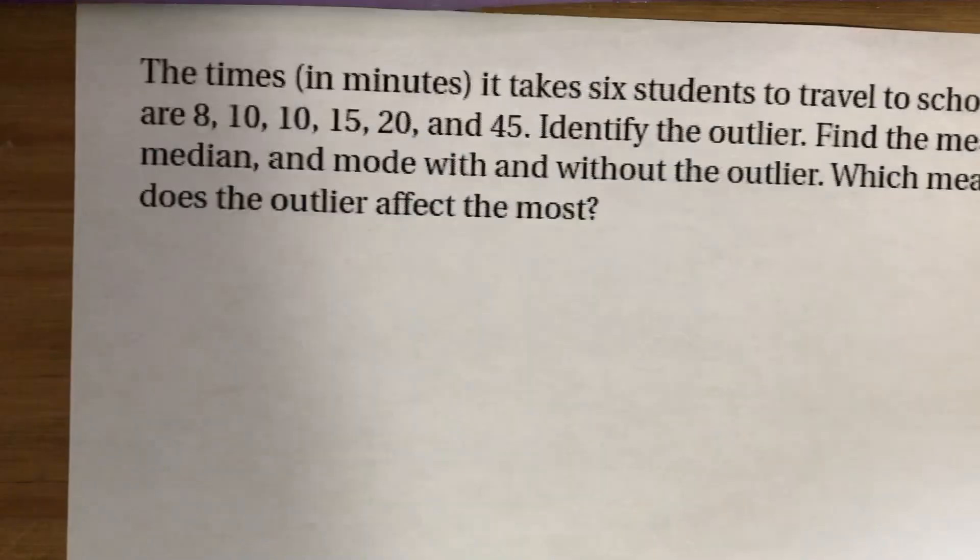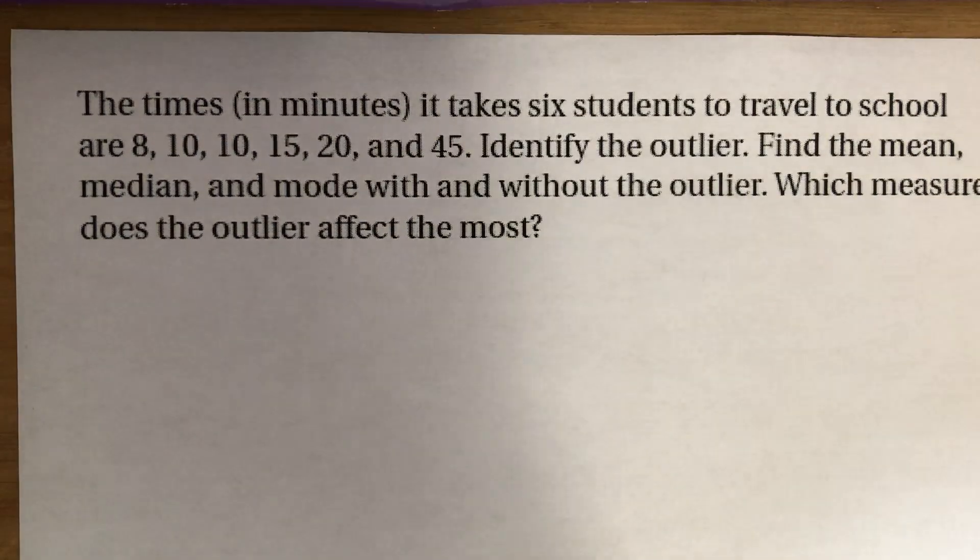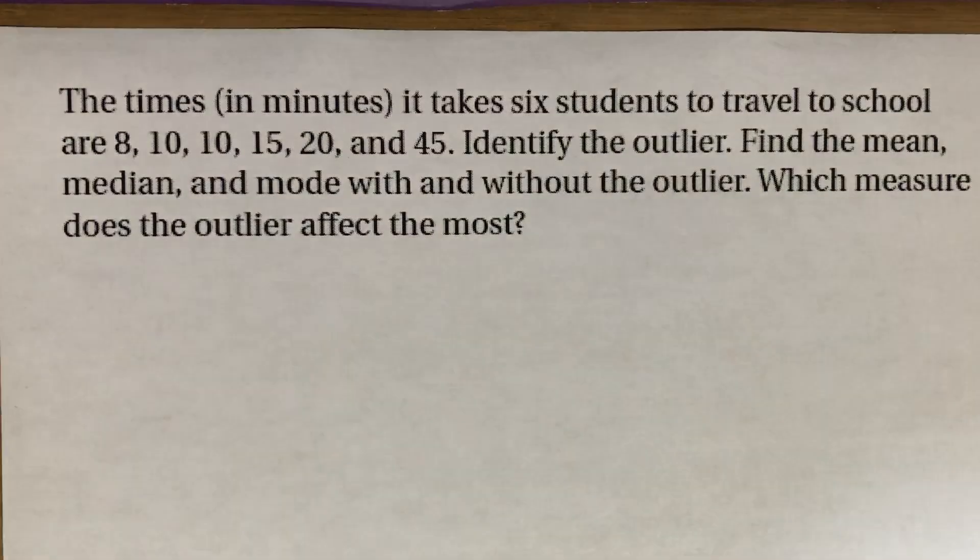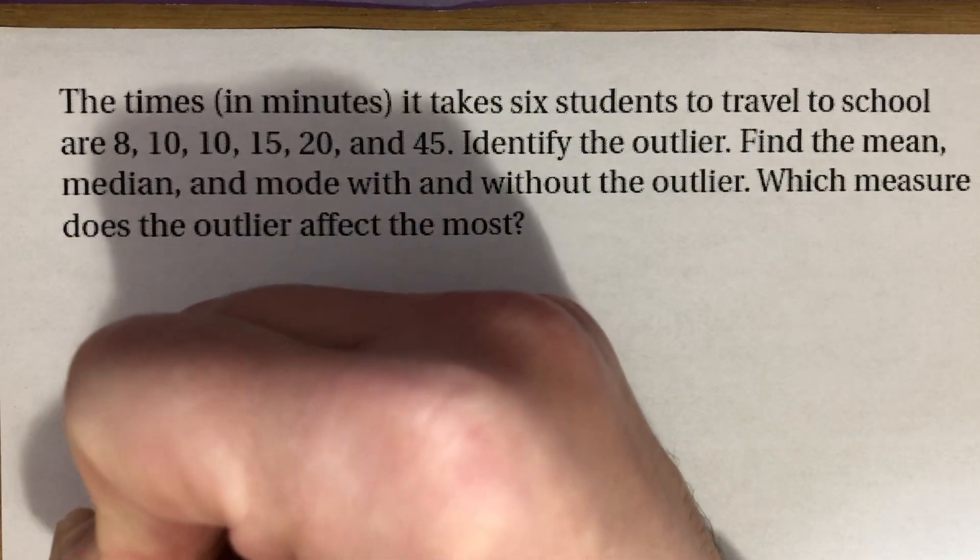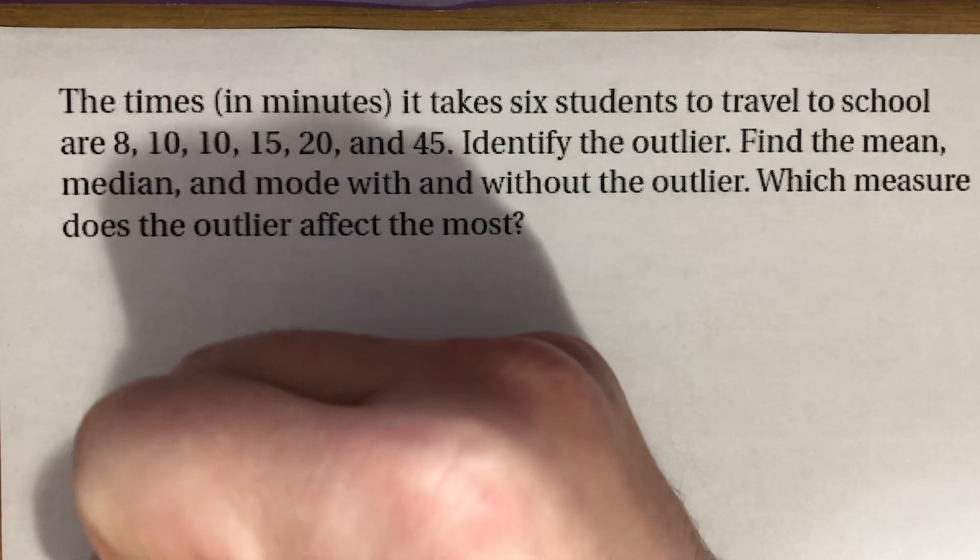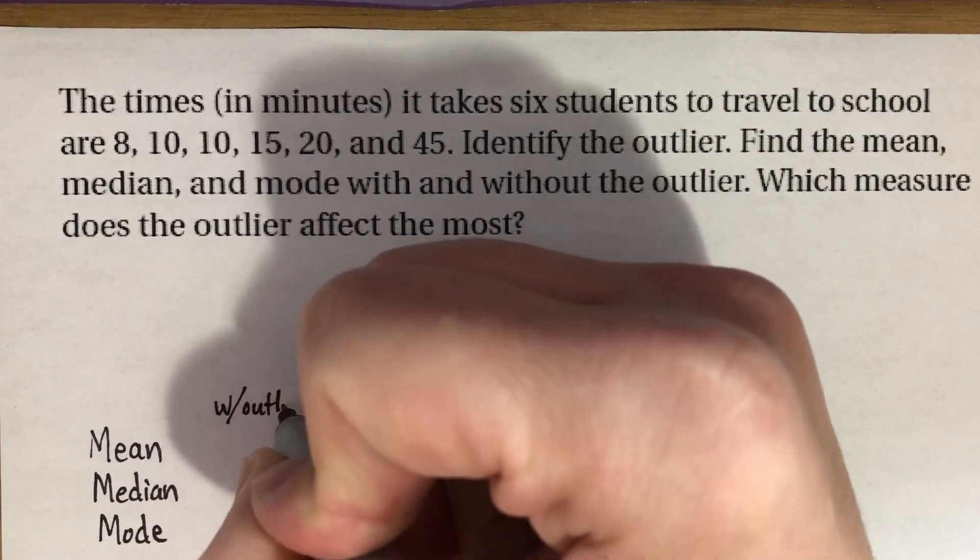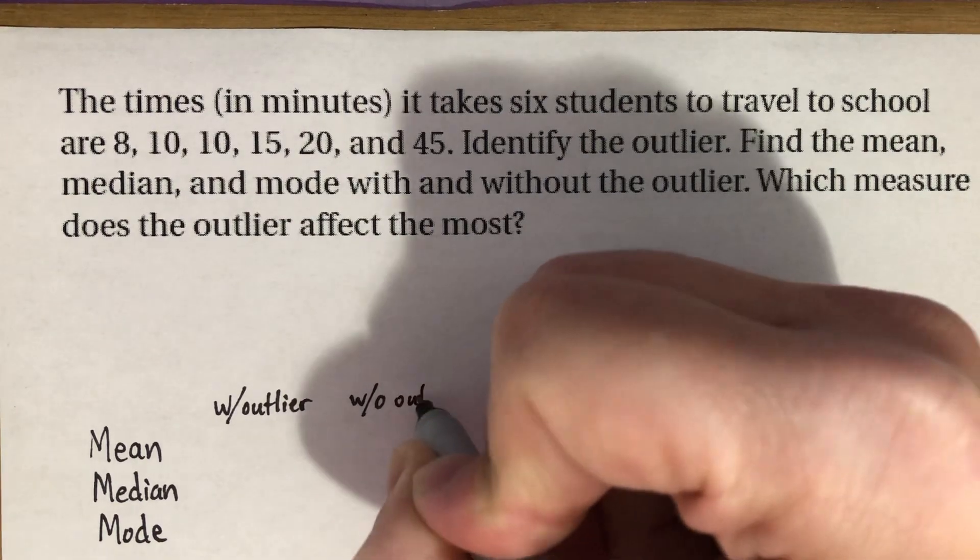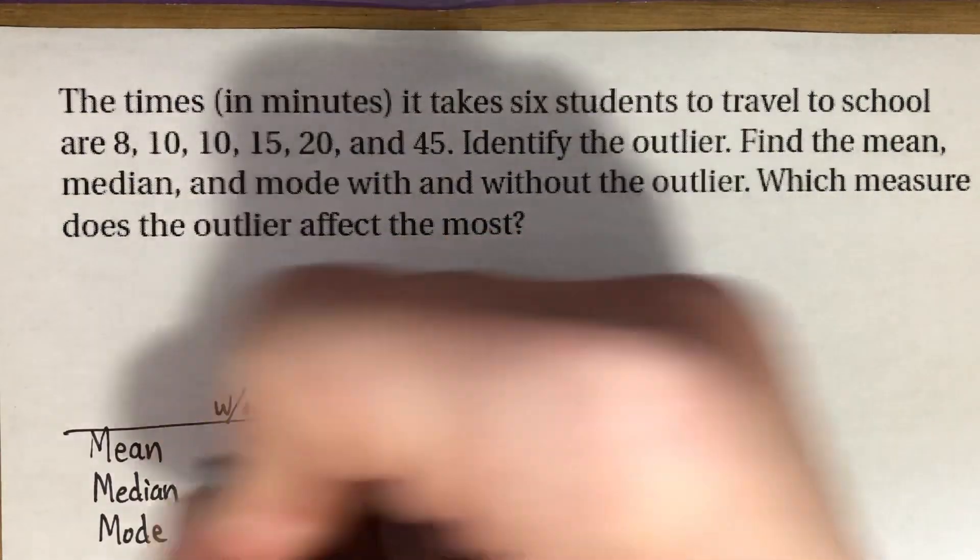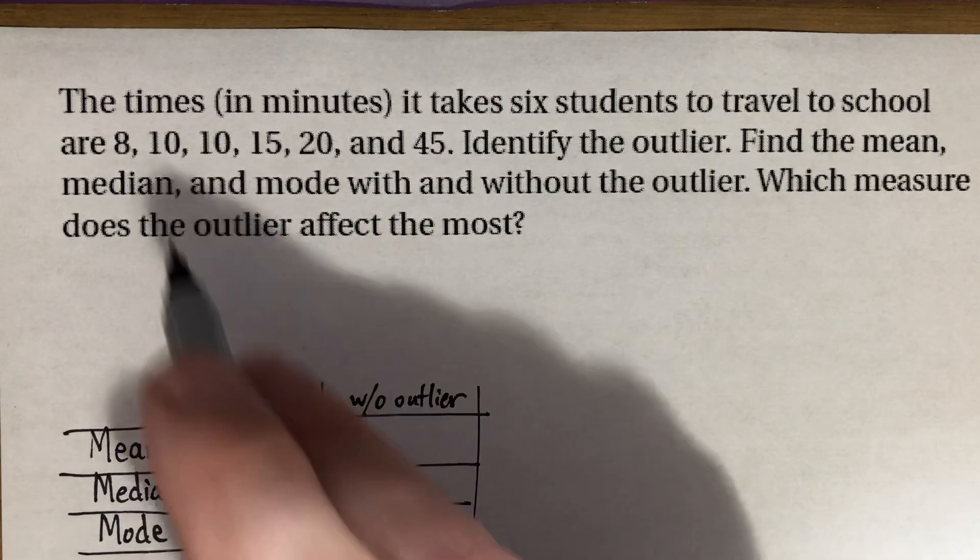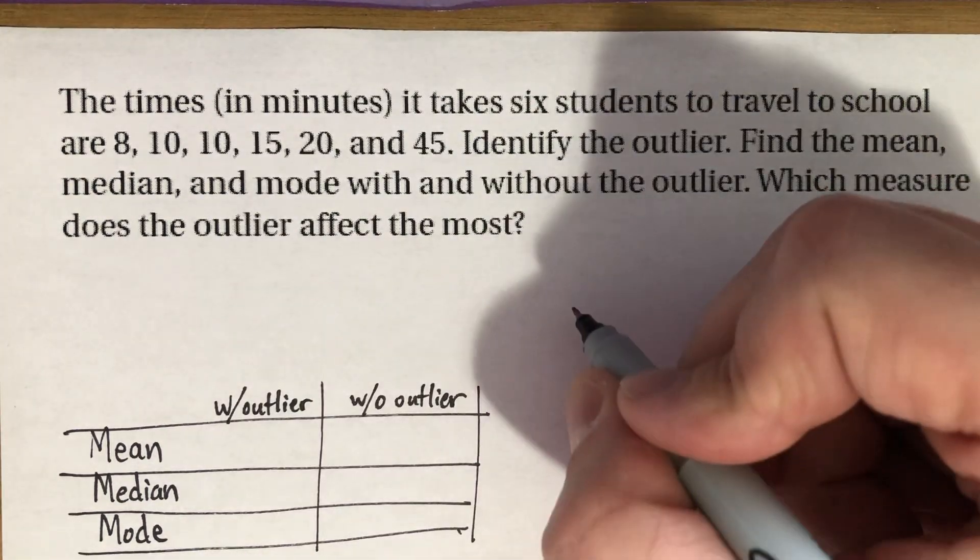They are comparing the time in minutes it takes for six students to travel to school. It shows all of those times, and then asked you to identify the outlier and asked you to find the mean, the median and mode with and without the outlier. So we're actually going to need to find several answers here, we're going to need to find the mean, the median and the mode. And we're going to find it with the outlier and without the outlier. So I'm going to make like a little chart here to organize my answers. And let's go ahead and find this out. Luckily, it's only six numbers, so it shouldn't take too long. The numbers are already in order for us.